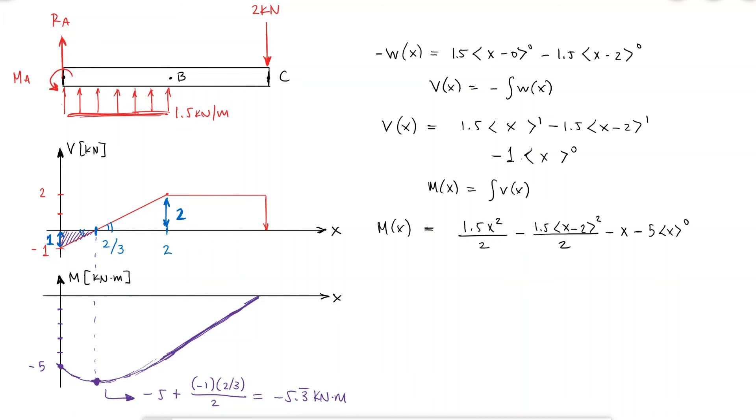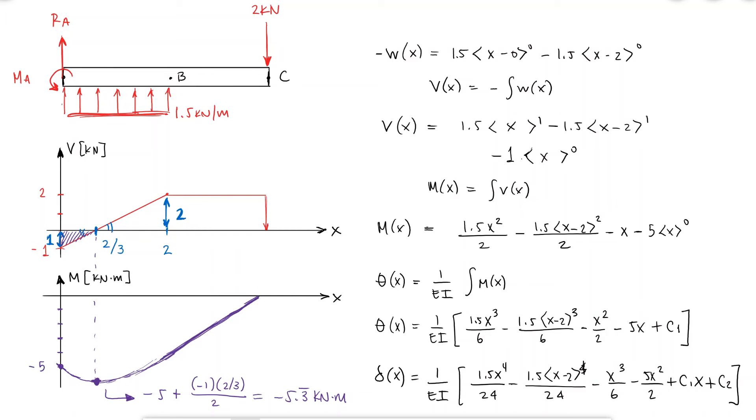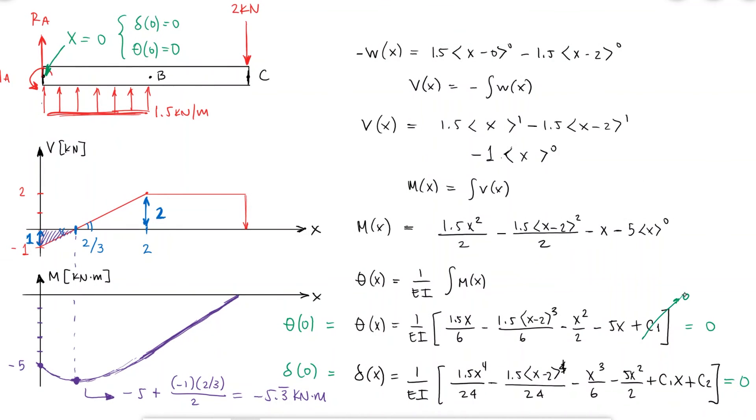This integral will have a constant c1, and I would get a second constant c2 when integrating once more to find the displacement as a function of x. The boundary conditions I use in this case is that since the beam is attached to the wall at x equal to 0, both the deflection and the slope should be 0. By substituting x equal to 0 in the theta and delta equations, I would find that both c1 and c2 are 0.